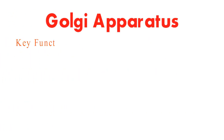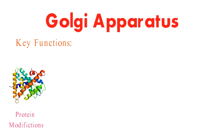Here are the key functions of the Golgi apparatus. The Golgi adds sugars, lipids, and other molecules to proteins, shaping them into their functional forms.